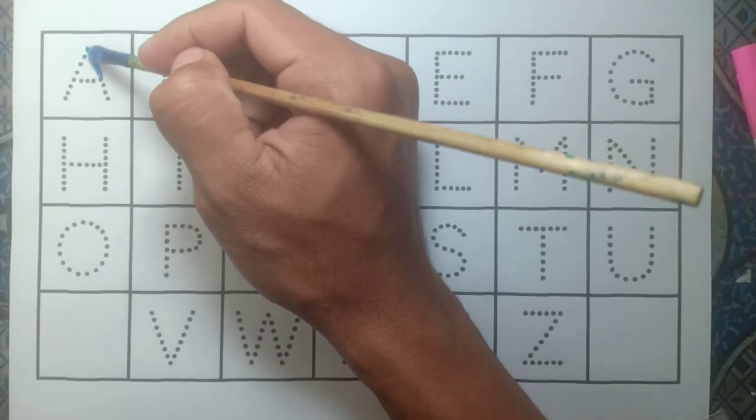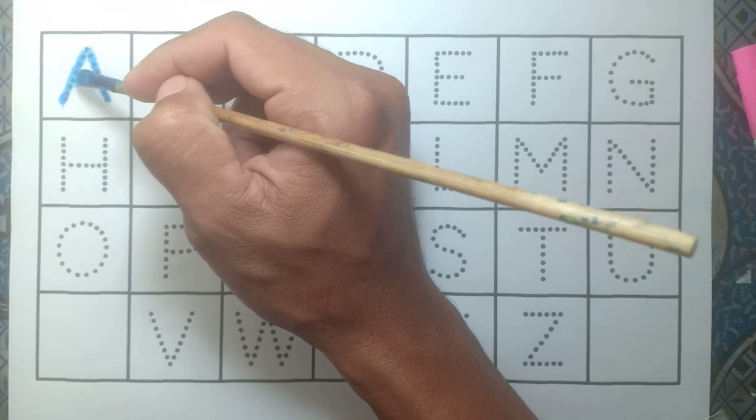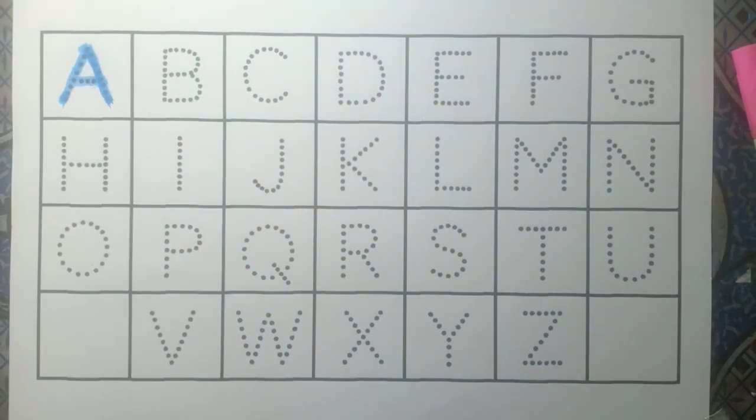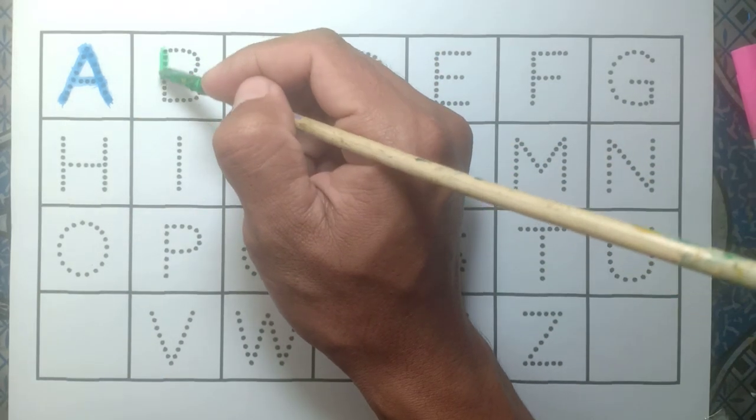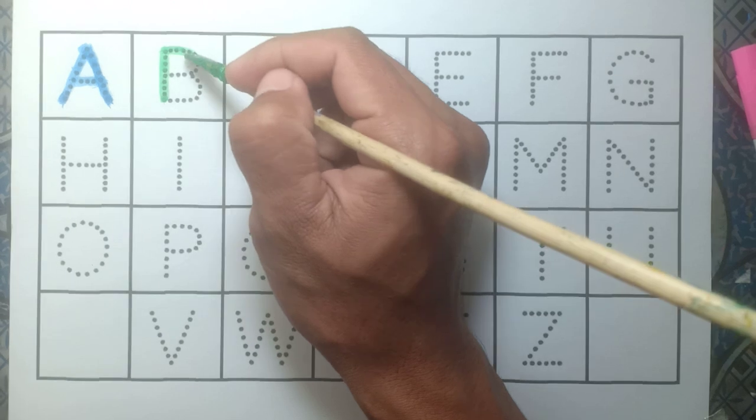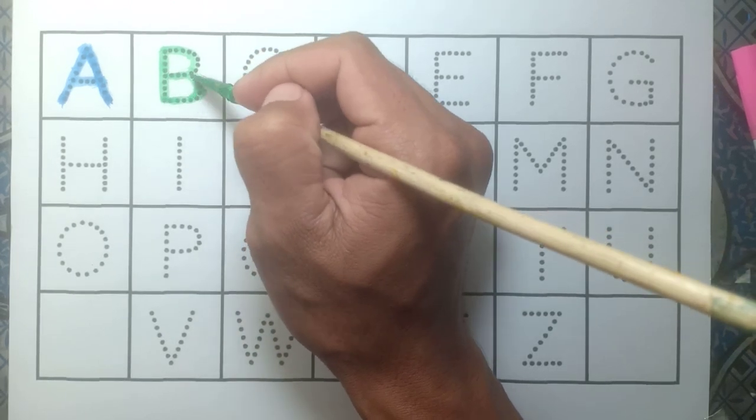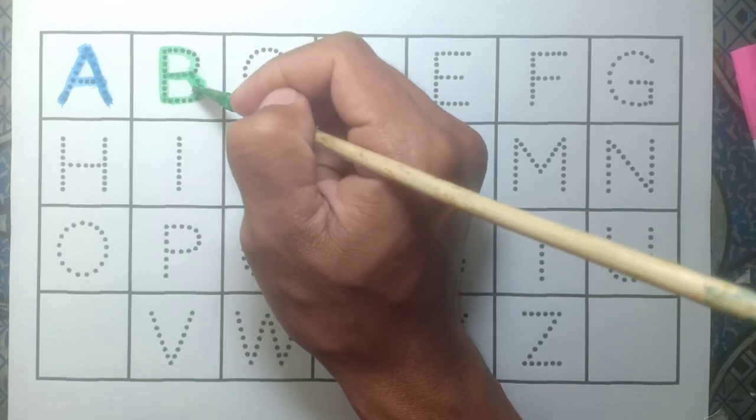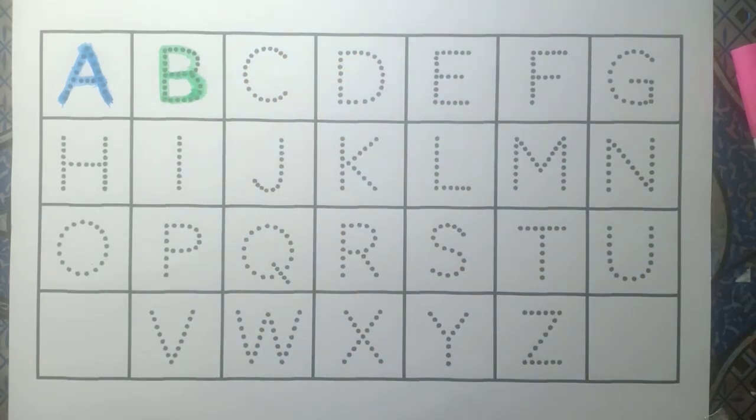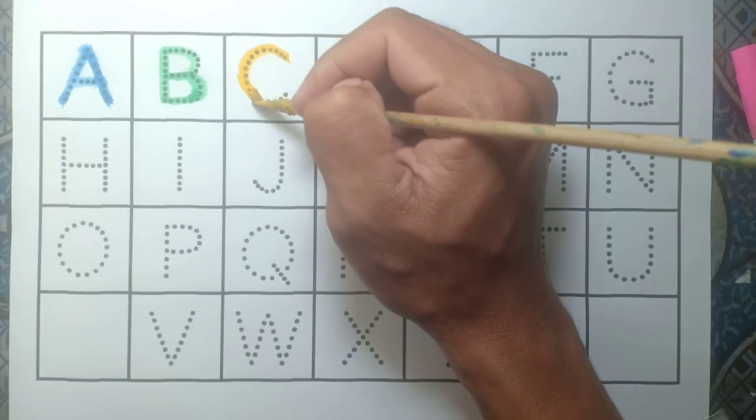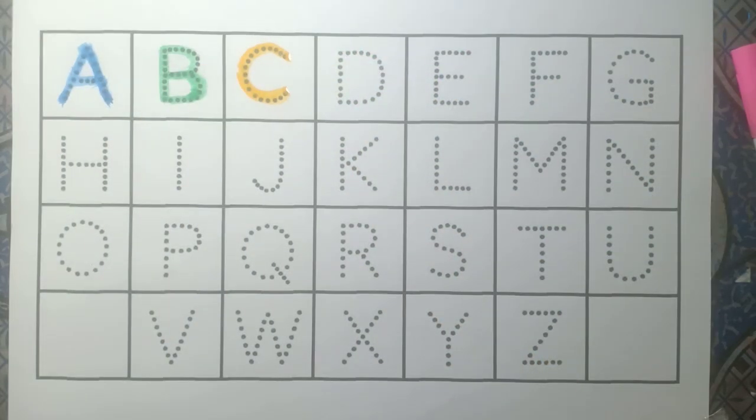A for apple, blue color. A for apple, blue color. And B, B for ball, green color. B for ball, green color. And C, C for cats, yellow color.